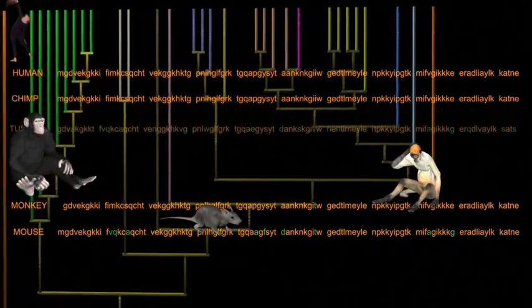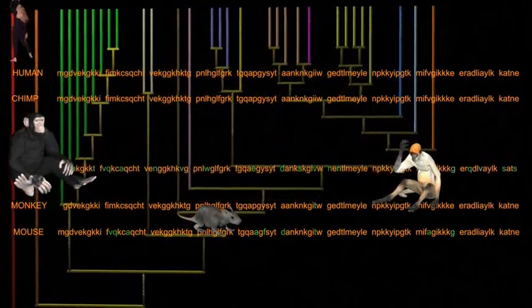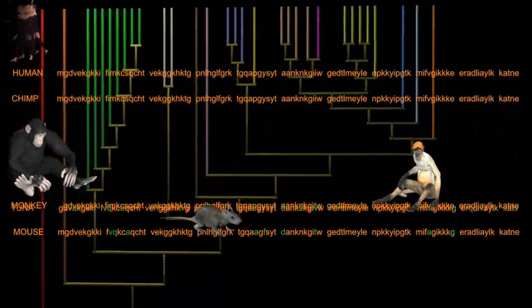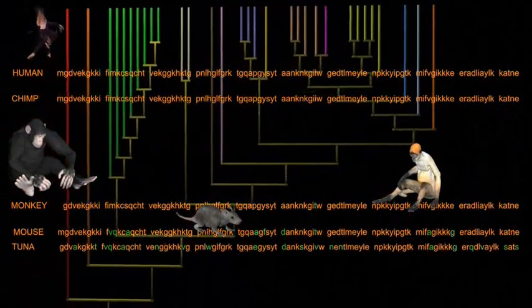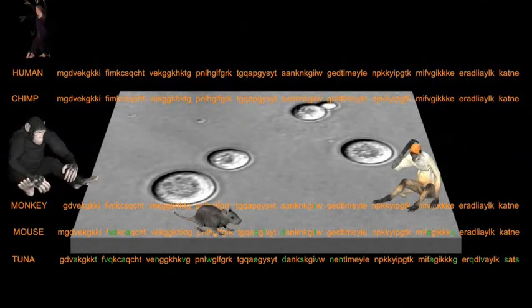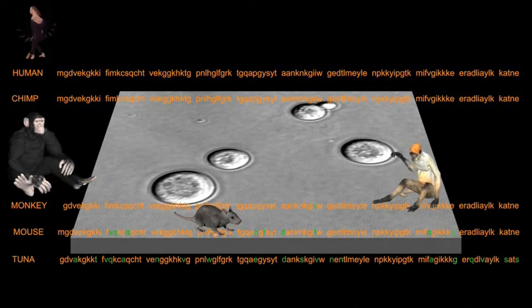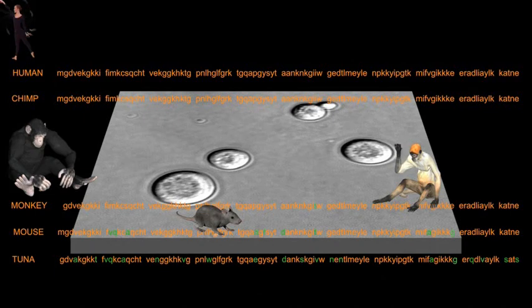The differences increase as we step further back in time and further from our own branch on the tree of life. The yeast itself has 51 amino acid differences from that of humans and chimps, and is one of the most distantly related organisms from humans, having separated from our branch over a billion years ago.